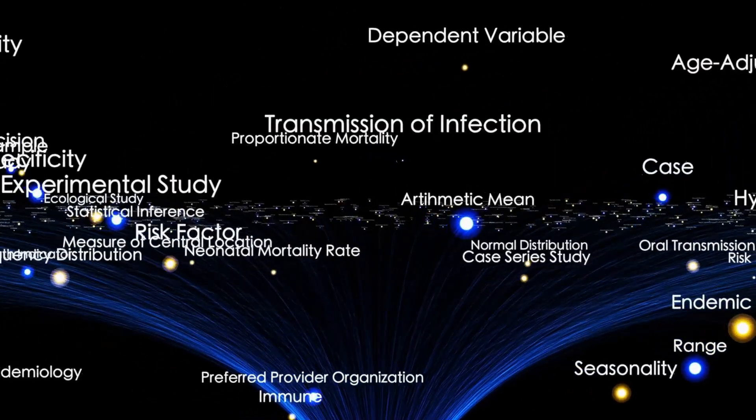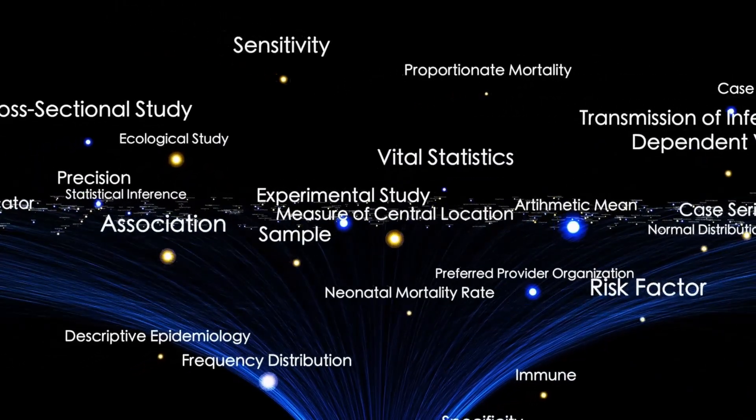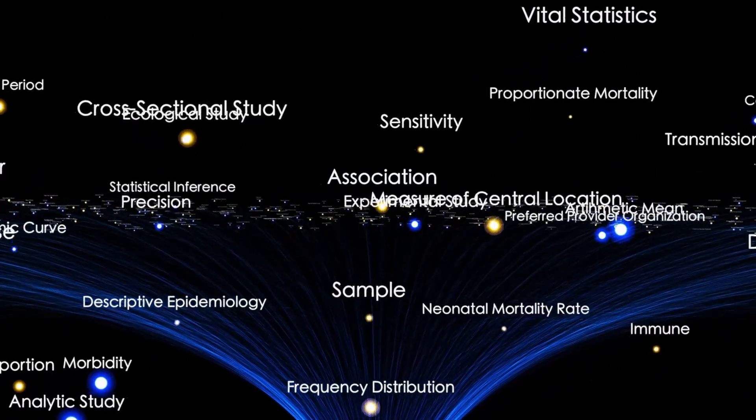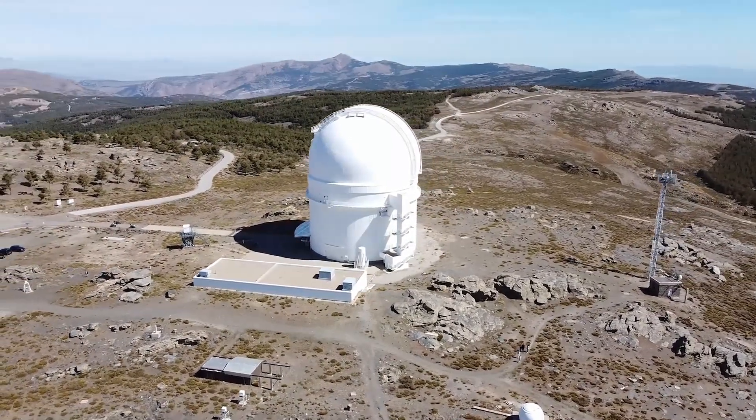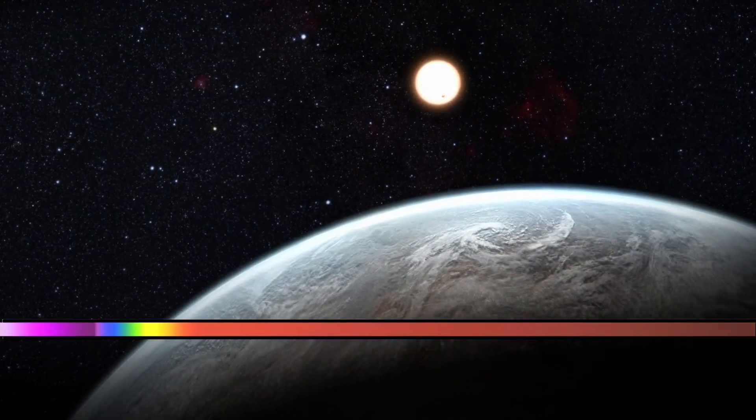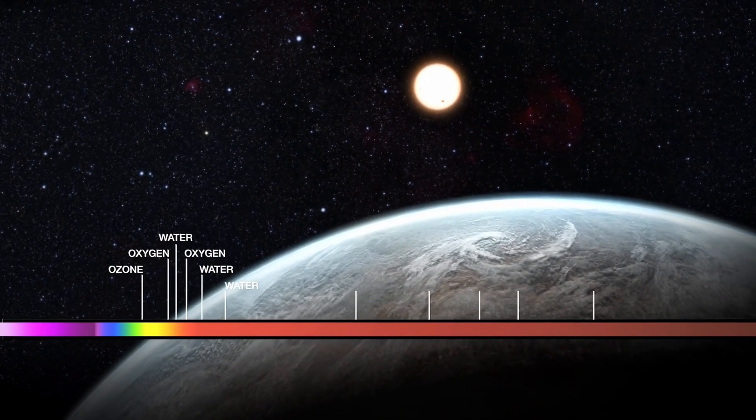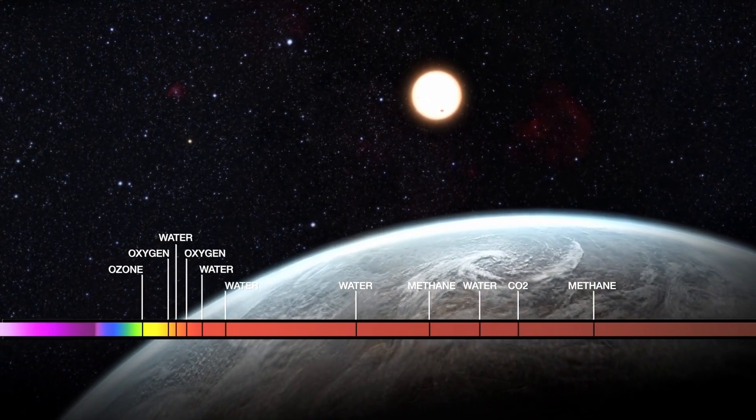Thousands have already been confirmed, yet countless more remain undiscovered. Studying them remains a formidable task, as the glare of their parent stars makes direct imaging difficult. Still, with advancements in observational tools, scientists have managed to directly capture images of a few exoplanets. To be visible this way, a planet must be large, distant from its star, and emit enough infrared energy—an uncommon combination. But even these rare glimpses yield important clues.